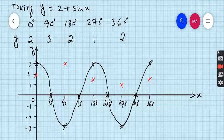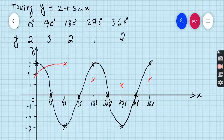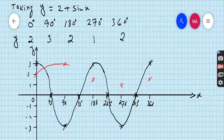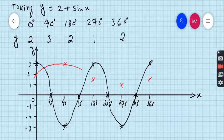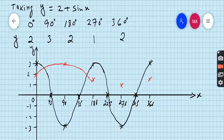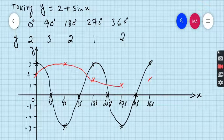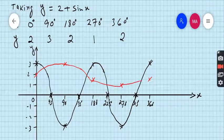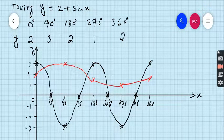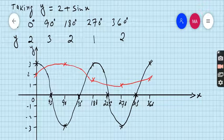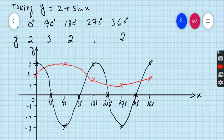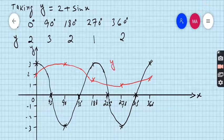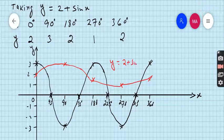So join all squares. First, second, third. This is the graph of y equals 2 plus sinx.